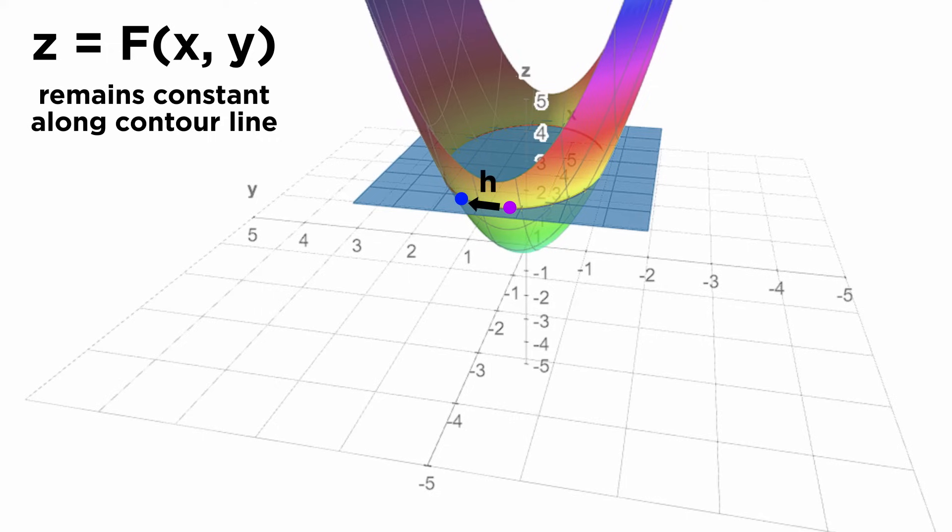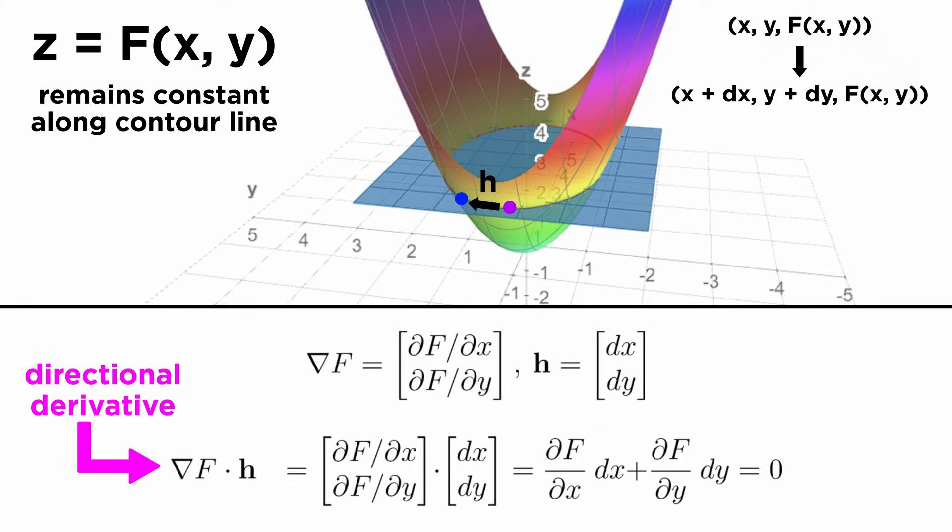Suppose that we take some tiny step along a vector h that takes us from the point (x, y, f(x,y)) to the point (x+dx, y+dy, f(x,y)). Given this condition, we must have chosen the components dx and dy to be such that we remain on the contour line in order for the value of f to be the same at both points. If we were to take the directional derivative of f in the direction of our small step h, we should find it to be zero, since there is no change in f.